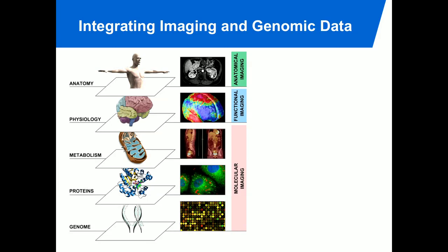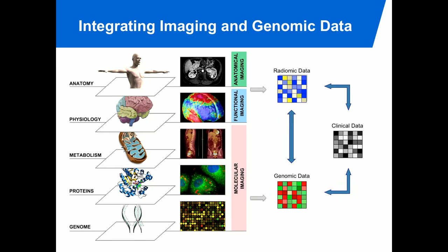What we try to do is quantify a lot of this data using the radiomics approach. We try to integrate imaging and genomic data — you have data from different hierarchical levels, from anatomical imaging all the way down to genomic data. We try to change the 3D imaging cube into quantitative radiomics data that we can then compare to genomic data and clinical outcome data.